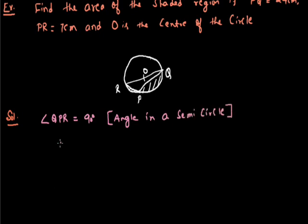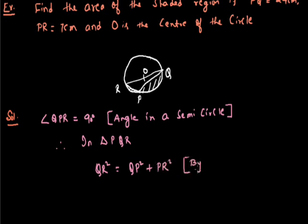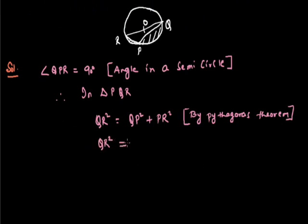Angle QPR is equal to 90 degrees. Therefore, in triangle PQR, QR squared by Pythagoras theorem equals PQ squared plus PR squared. It is given QR squared equals 24 squared plus 7 squared, which is 576 plus 49, equal to 625.